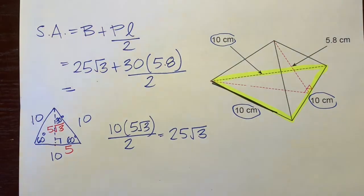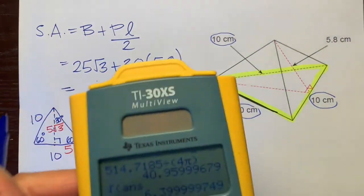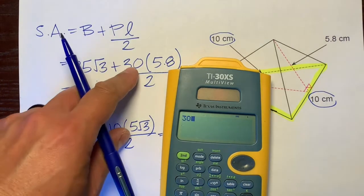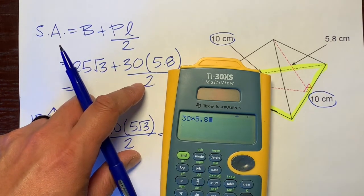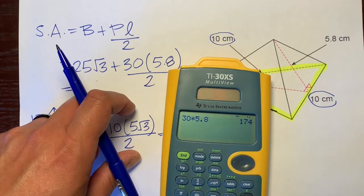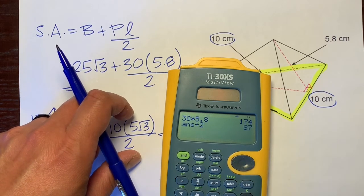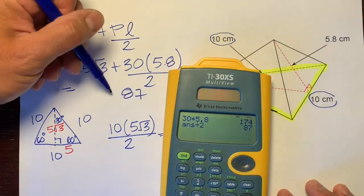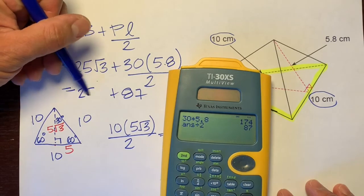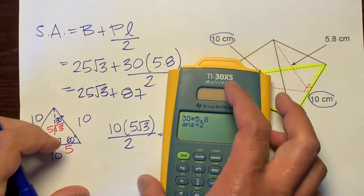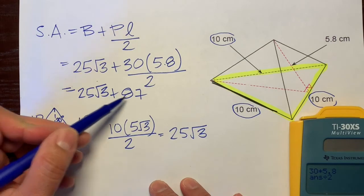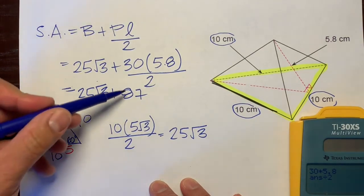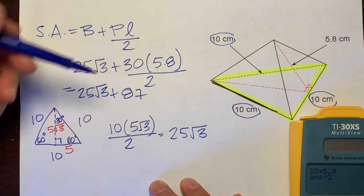Now let's just use our trusty handy calculator. We have 30 times 5.8 divided by 2, which is 87. We'll just bring this down, 25 radical 3. So 25 radical 3 plus 87. We can't combine these, so that's our final answer: 25 radical 3 plus 87.